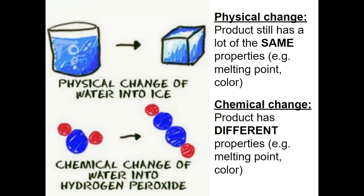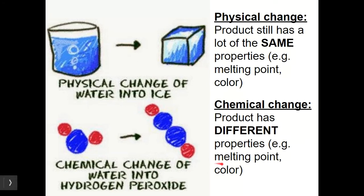Figuring out when this has happened on our human scale, just making regular human observations, is a little more tricky because we can't see the atoms and molecules directly. But we can see if properties have changed. In a physical change, the product still has a lot of the same properties — the same melting point, possibly the same color. In a chemical change, the product will have different properties: a different melting point, possibly a different color. We're going to go over some more things you can look at.